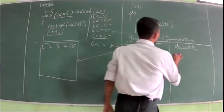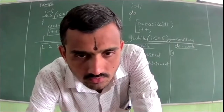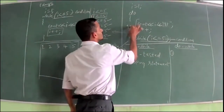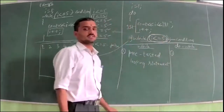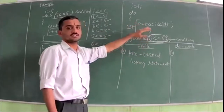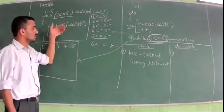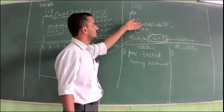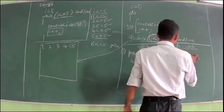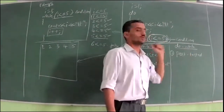In case of do-while loop, if you look at the code, the statements are executed first. Later, this condition is checked — condition is checked at the end. Statements are executed first, then condition is checked. That means condition is checked after the statements are executed. In case of while loop, condition is checked before the statements. Whenever you come across 'before', you say pre-tested. Whenever you come across 'after' — after the execution of statements, condition is checked — we call it post-tested.